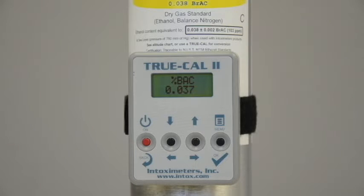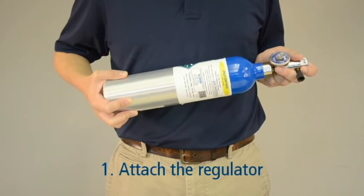Now that you know your expected gas value, you can proceed with a calibration adjustment. First, attach the regulator to the dry gas tank.